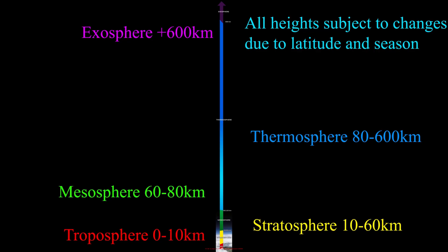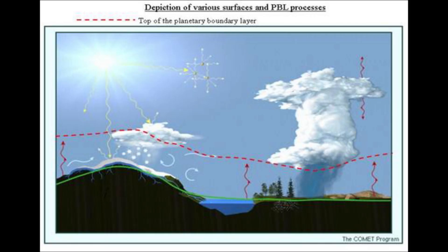The troposphere is the lowest region of the atmosphere, extending from the earth's surface to a height of about 6–10 km. It contains 75% of the atmosphere's mass, and 99% of the total mass of water vapor and aerosols.